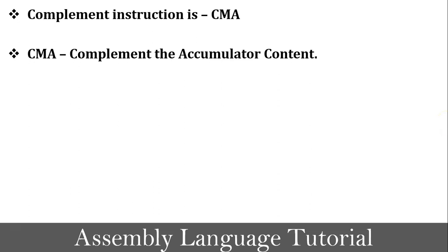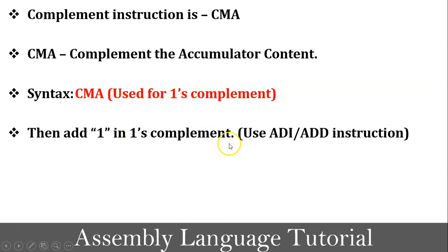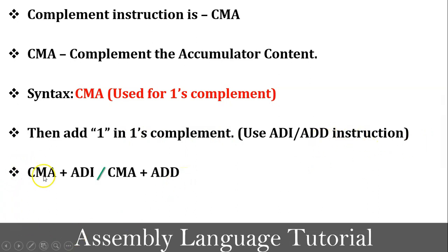Using the CMA instruction we can perform only 1's complement. For 2's complement, as per its definition, we first perform 1's complement using CMA, then add 1 to the result using ADI or the ADD instruction. So 2's complement is implemented using the combination of CMA and ADI. There is no separate instruction for 2's complement in 8085.